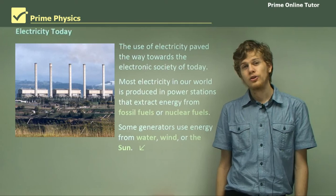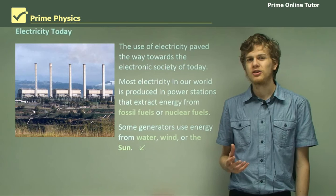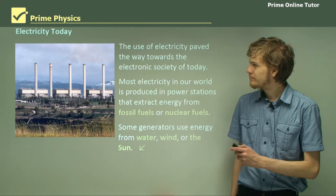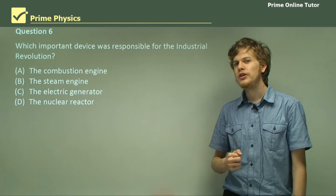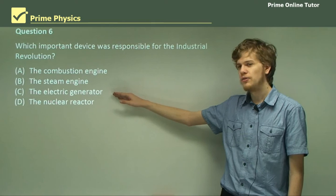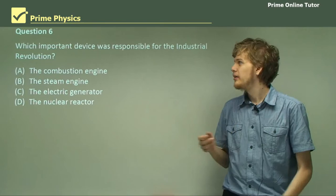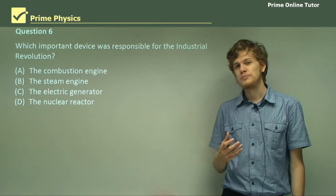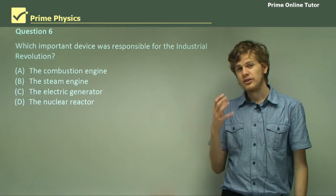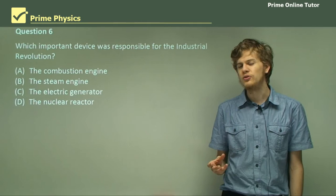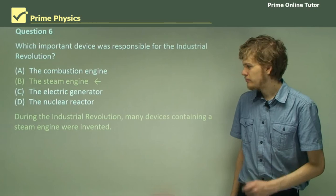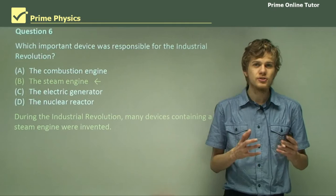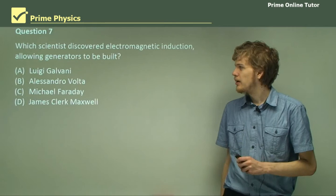That's the end of the theory. We've learned a little bit about the history of electricity, how it was invented, and how it gained popularity during the Industrial Revolution. Let's go on to some questions to check your knowledge. Question six: which important device was responsible for the Industrial Revolution? Was it the combustion engine, the steam engine, the electric generator, or the nuclear reactor? Remember that during the Industrial Revolution, we were able to use the chemical energy in things that burn — like coal, oil, and gas — to produce large amounts of kinetic energy, which manifested as the kinetic energy of steam before it was used to push pistons or spin turbines. And so the correct answer here is the steam engine.